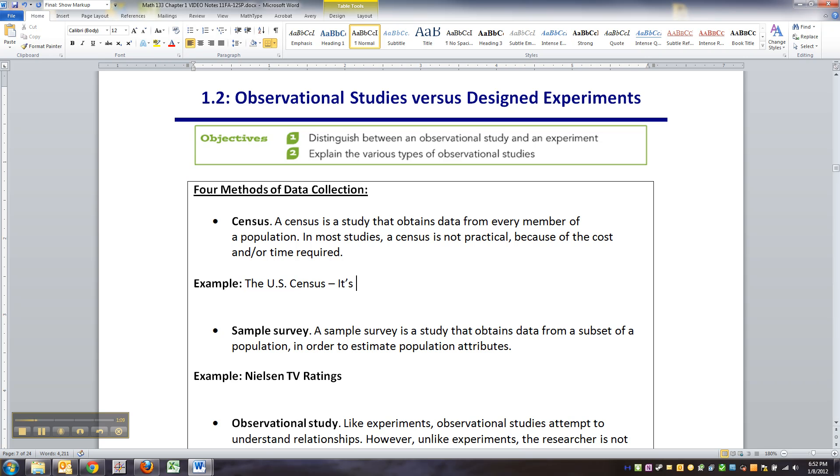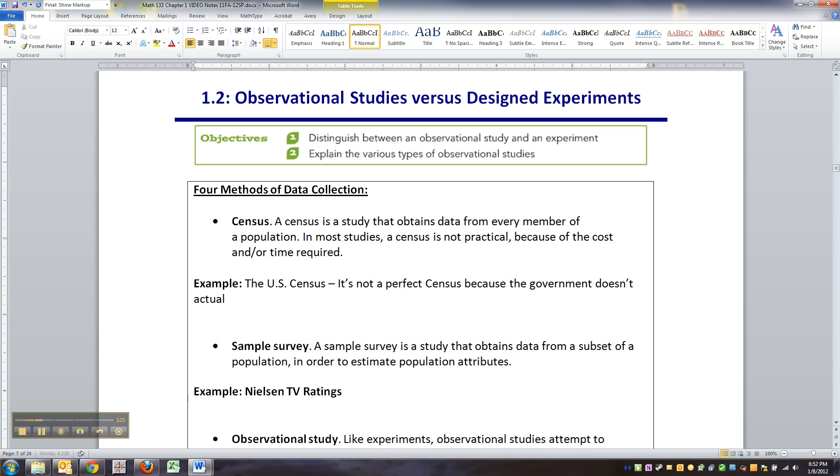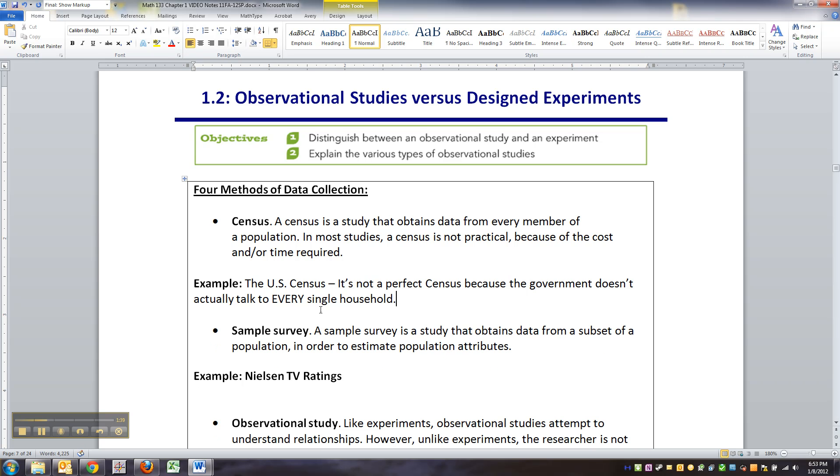The U.S. census is as close to a demographic census as we get, but it's not a perfect census, because the government doesn't actually get every single person or household. When you think of census, that's what we're thinking of.